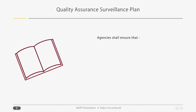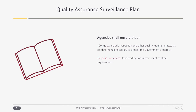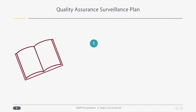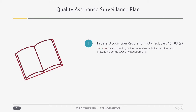First, the Federal Acquisition Regulation Part 46.102 establishes policy that contracts include inspection and other quality requirements determined necessary to protect the government's interests. Supplies or services tendered by contractors must meet contract requirements. Government quality assurance is conducted before acceptance, and non-conforming supplies and services are rejected. QASP are designed to ensure these policy requirements are met. FAR Part 46.103(a) requires the contracting officer to receive technical requirements prescribing contract quality requirements, such as inspection and testing requirements, or for service contracts, a quality assurance surveillance plan from the requiring activity.